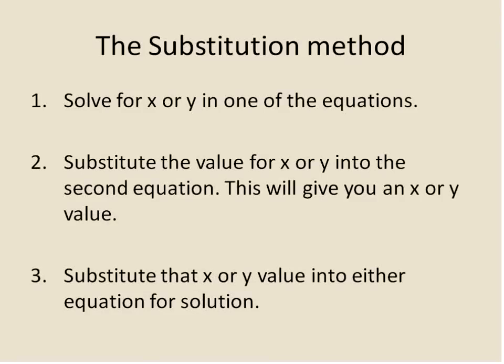So to summarize, the substitution method works like this: first, solve for x or y in one of the equations. Then take that value and substitute it into the x or y position in the second equation. This will give you an actual value for x or y, and then you substitute that value into either one of the equations to get your complete solution.